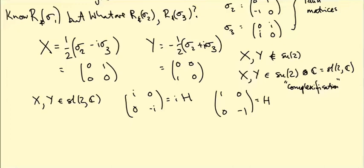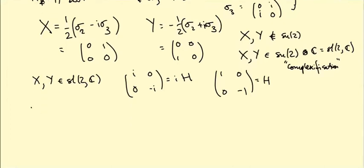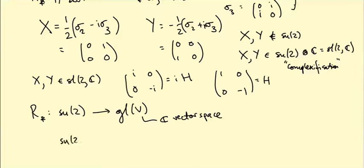Okay, is this any good? Does this actually help us? Well, yes, because if we have a homomorphism of the algebras from little su(2) to gl(V), where V is a complex vector space, then we get for free a homomorphism from the complexification of little su(2) to the same vector space gl(V). So I'm going to write this as r_star superscript C.